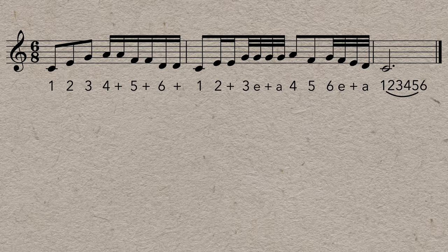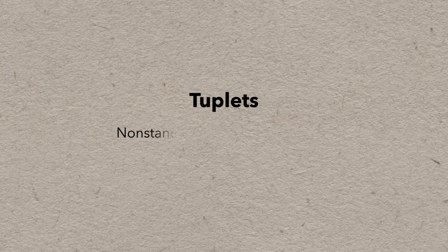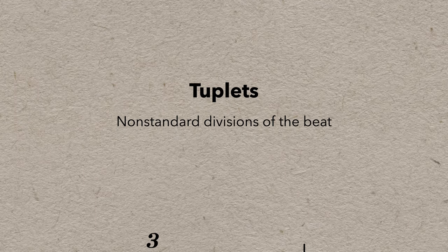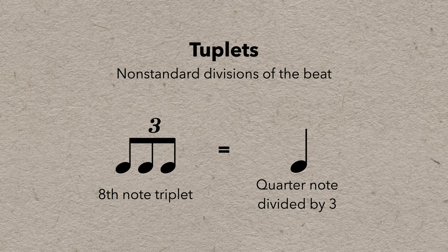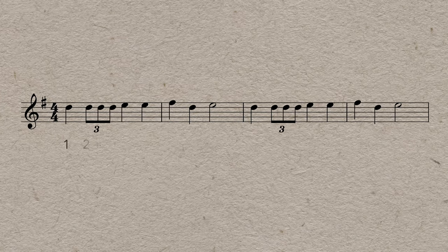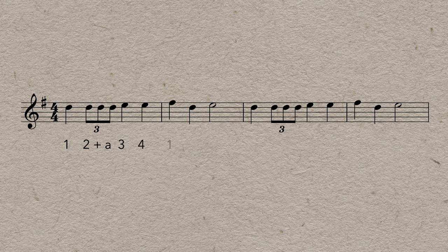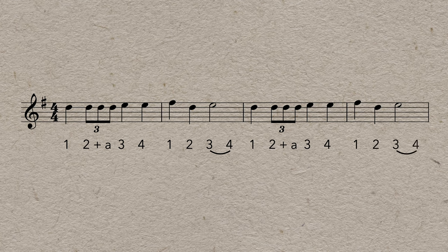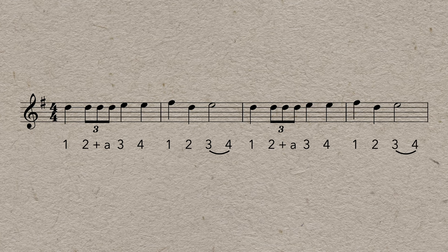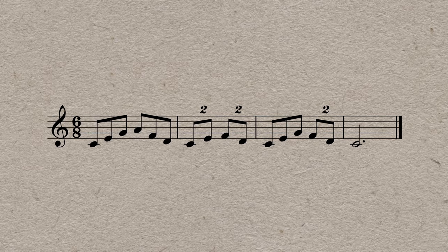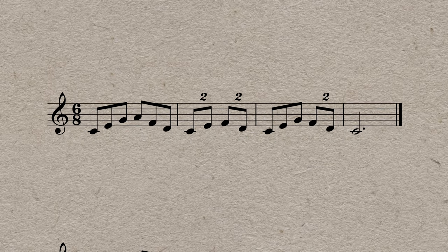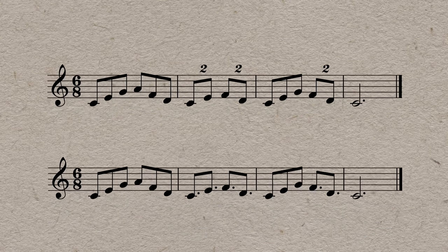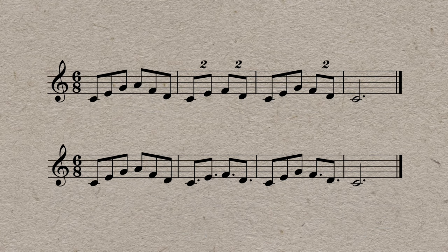After simple subdivision is the issue of tuplets, which are non-standard divisions of the beat. In simple time, that usually refers to a triplet, fitting three eighth notes into the space of one beat. But compound time is already based on triplets. So the most common tuplet is actually a duple, which fits two notes into the space of a dotted quarter. You can also get the same effect with dotted eighths. They sound the same, but composers may choose one or the other based on personal preference.